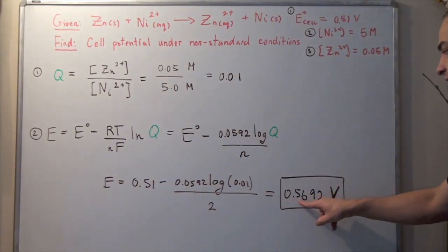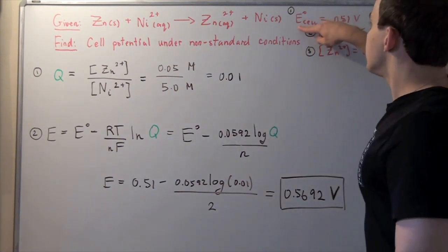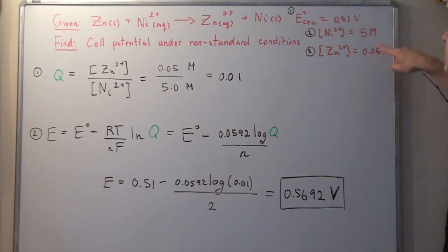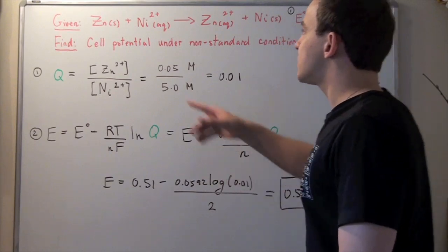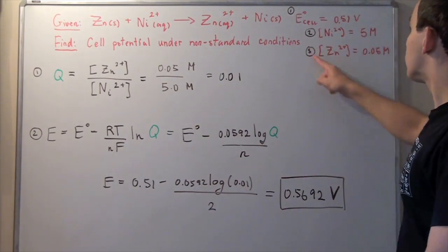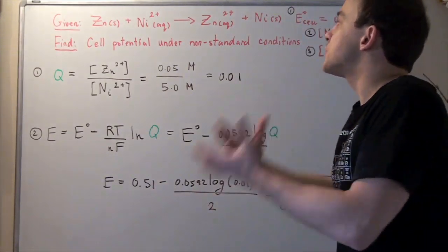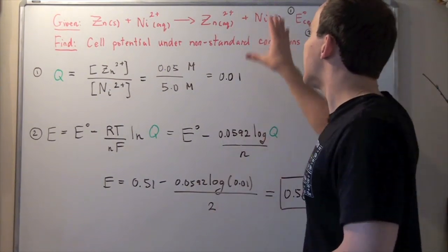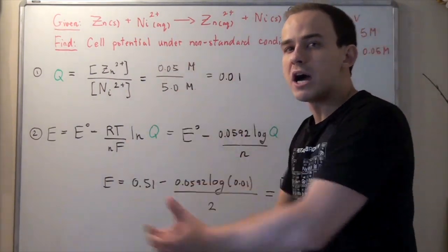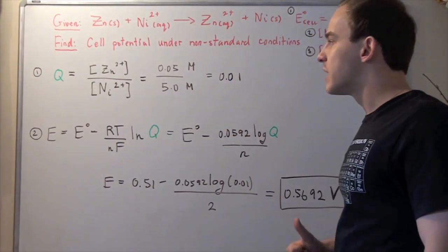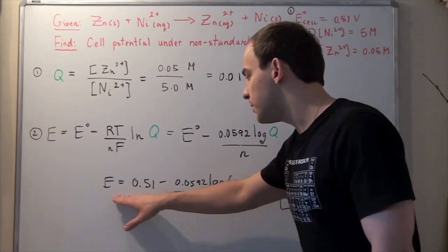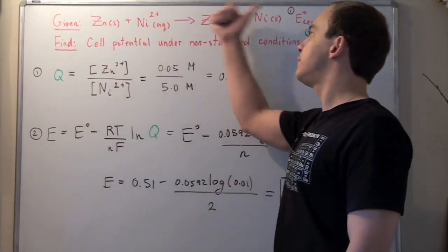What we get is 0.5692 volts, which is greater than our cell potential at equilibrium. This means that these nonstandard conditions represent a situation in which the reaction is more product favored than at equilibrium. This represents a condition at the beginning. When we first add our zinc and nickel, we won't have a lot of products formed. We're going to have a lot of reactants. So according to Le Chatelier's principle, this reaction will be very product favored, very spontaneous in this direction. That's exactly what Q tells us and what this new E tells us.